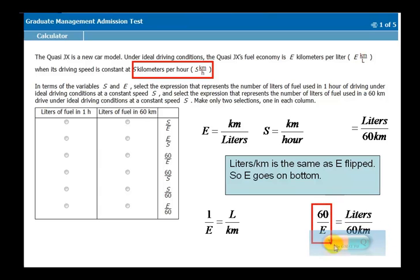And 60 over E, which one of these is 60 over E? There it is. So 60 over E is your answer in terms of liters of fuel in 60 kilometers. You mark this one. So that's your final answer here.